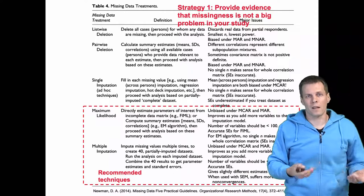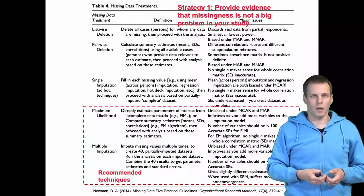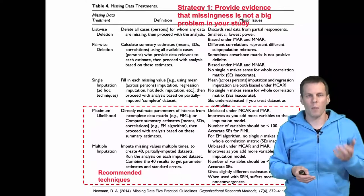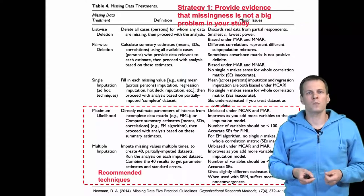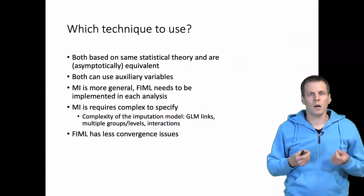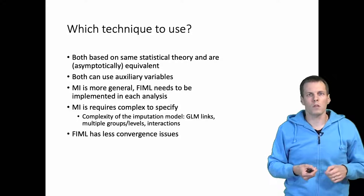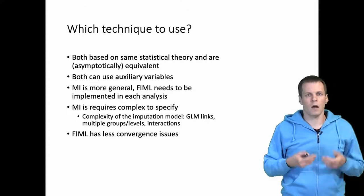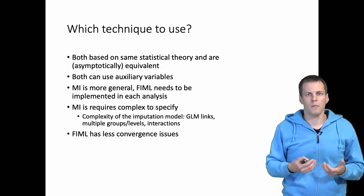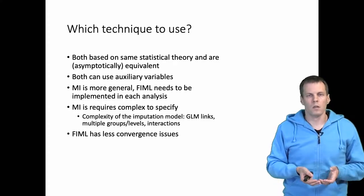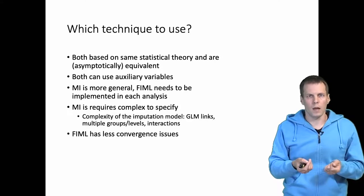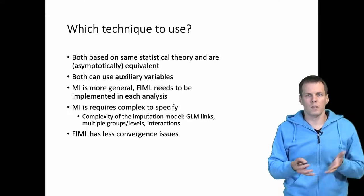If we have an amount of missing data that we simply cannot ignore — say, 50 cases out of 1000, which is probably not ignorable — which technique should be applied? Both FIML and multiple imputation are asymptotically equivalent, meaning that in large samples, if we estimate the same model, they should produce the same result, and this has been proven to be the case. So in large samples, it's a matter of preference, though there are some details about their capabilities that might influence our decision.